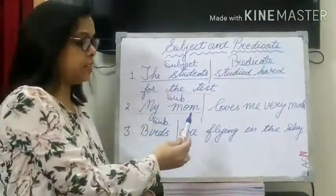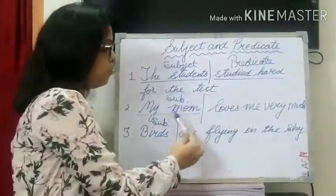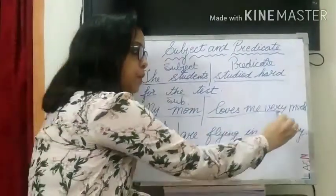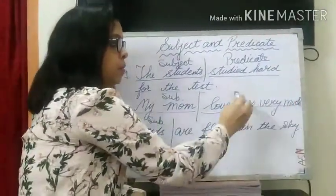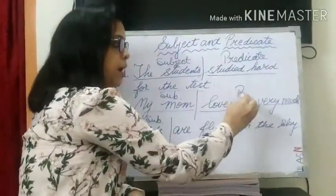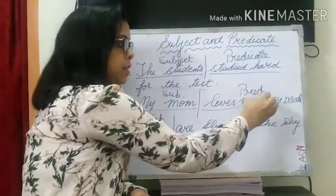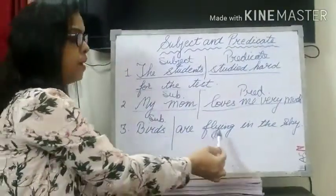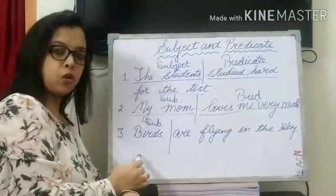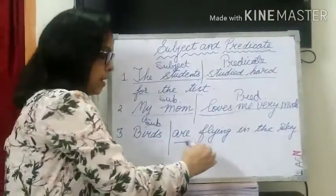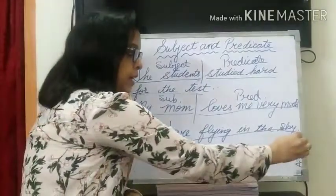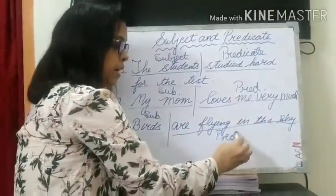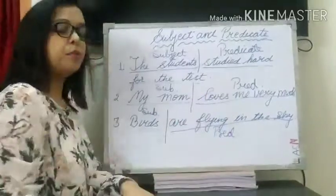Similarly in the second sentence — my mom loves me very much — 'loves me very much' is the predicate. Birds are flying in the sky — what are we talking about birds? 'Are flying in the sky' — so this is the predicate.